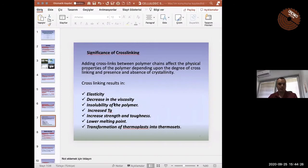Significance of cross-linking. Cross-linking reactions change the physical properties of the polymer. For example, elasticity of the polymer can be changed or viscosity of the polymer can be decreased by the reaction with cross-linking agents. Next one.